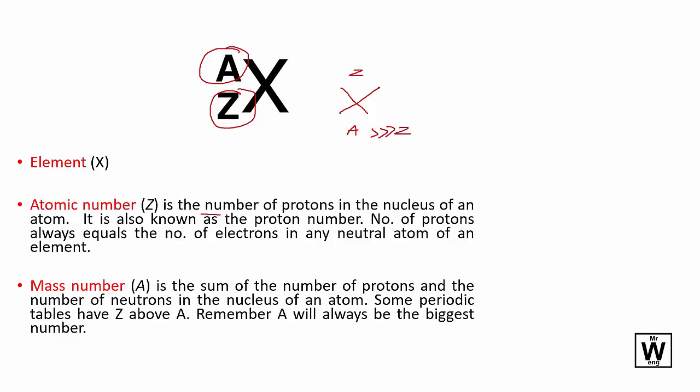The atomic number is the number of protons that determines what element it is, and it always remains the same. If it's carbon, it's always 6.